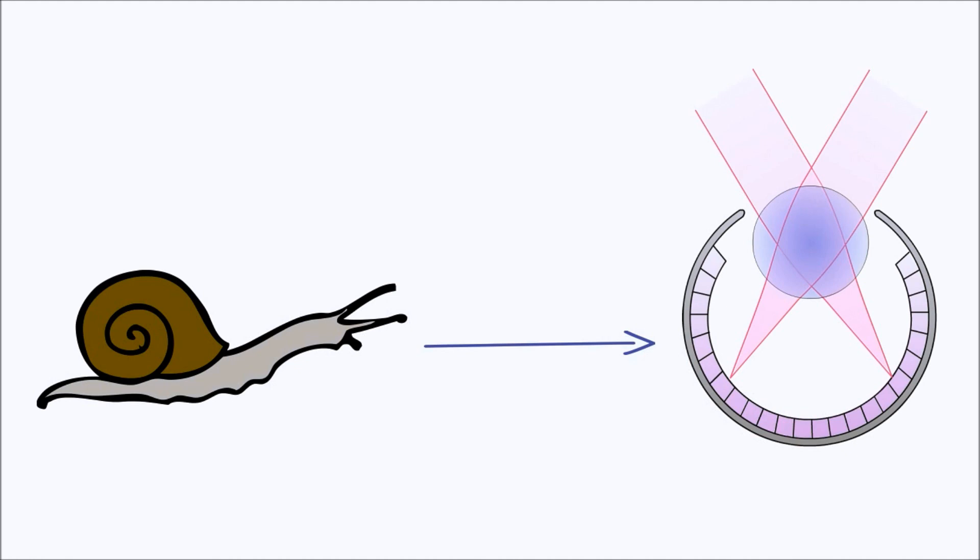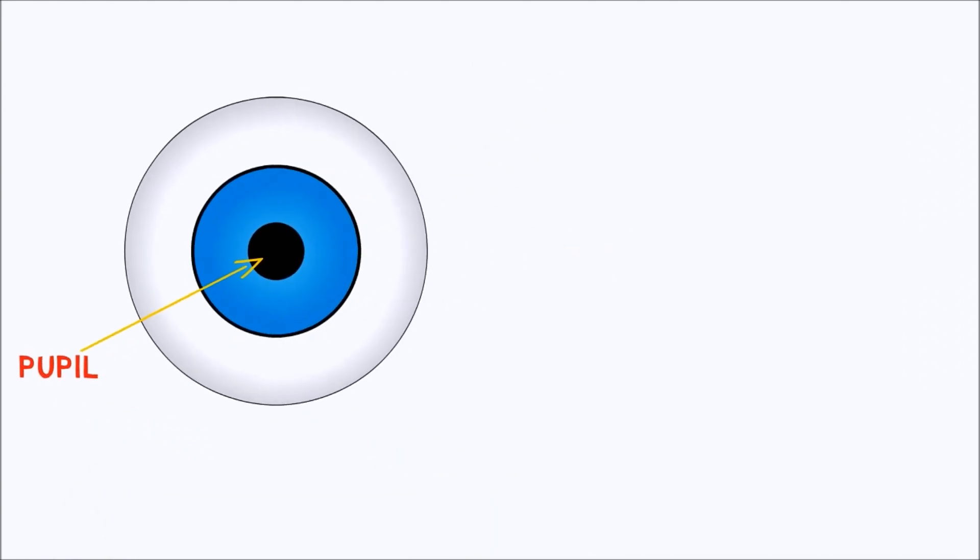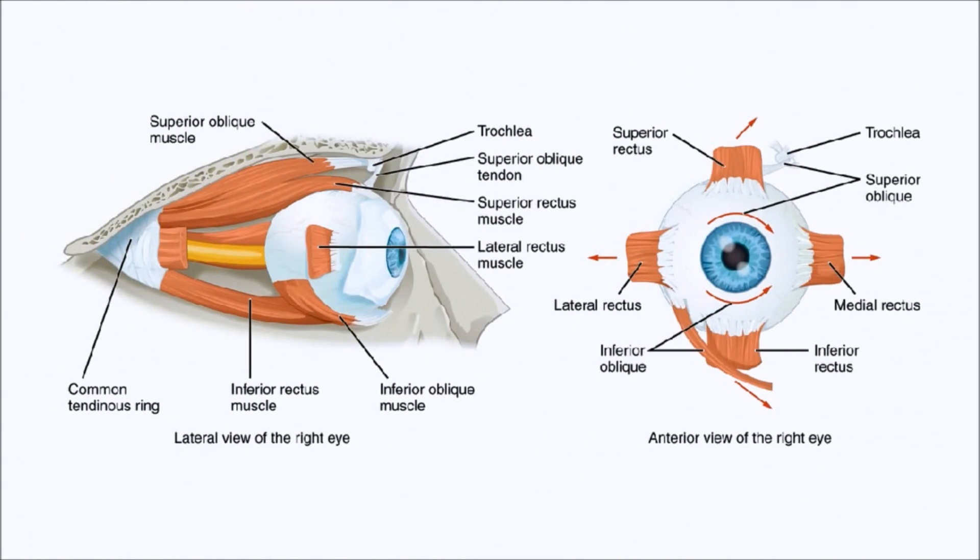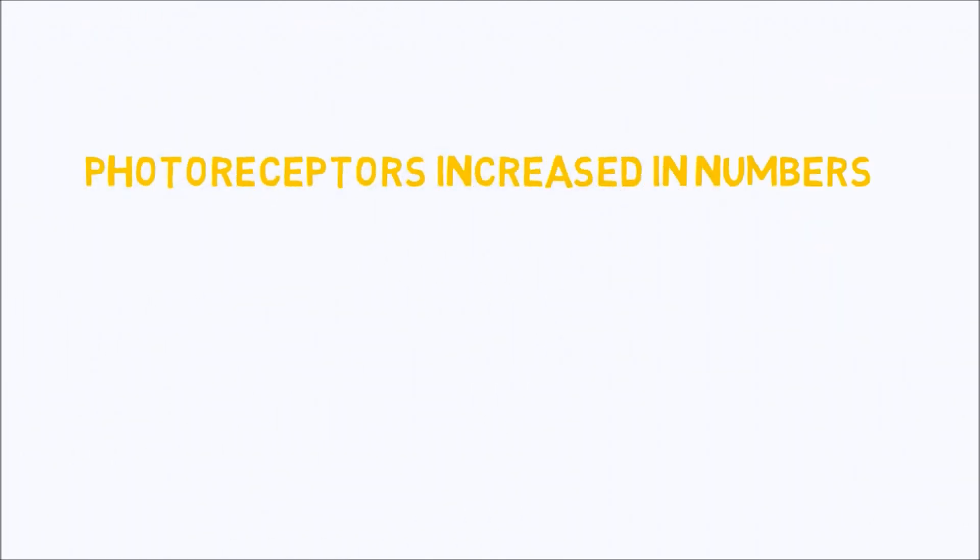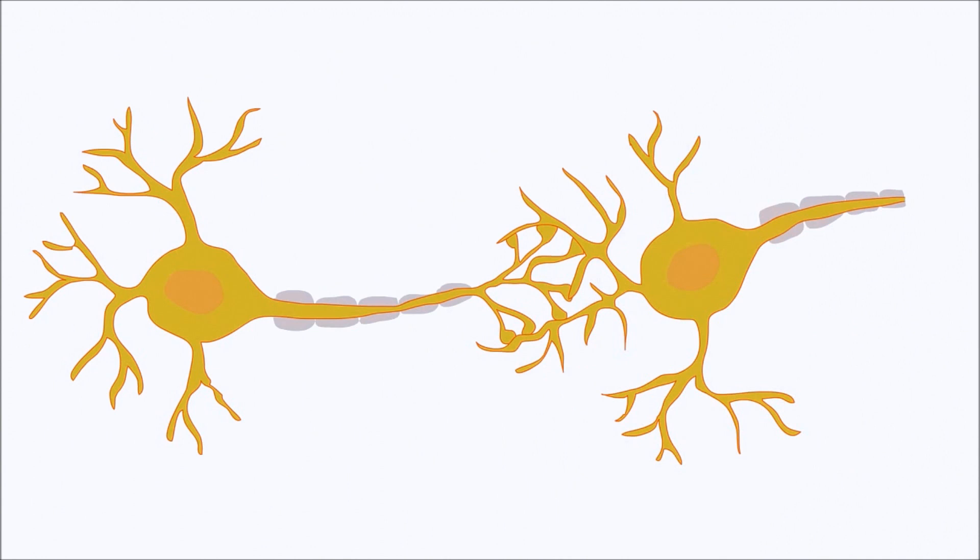Further improvements include evolved pupils that opened and closed to let in just the right amount of light for forming clear images. Muscles evolved to fine-tune focusing and to point the eye in different directions. Photoreceptors increased in number, providing more detailed images. Neurons evolved that could process signals and coordinate behavior.